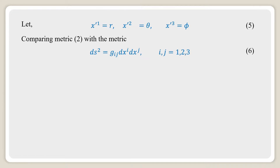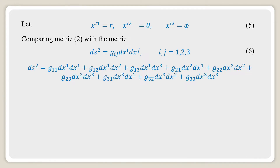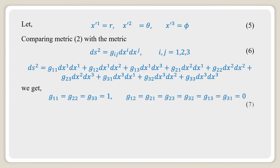Comparing the metric with ds² = g_ij dx^i dx^j where i and j vary from 1 to 3, we expand all terms. We get g₁₁ = g₂₂ = g₃₃ = 1 and all other terms — g₁₂, g₂₁, g₂₃, g₃₂, g₁₃, g₃₁ — are equal to 0.